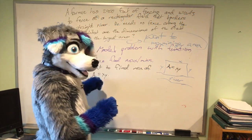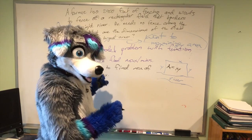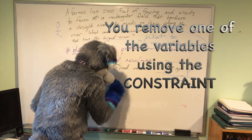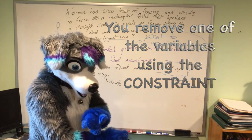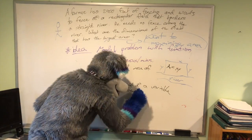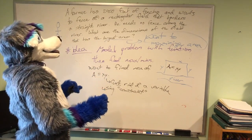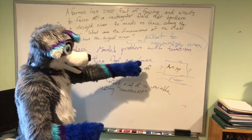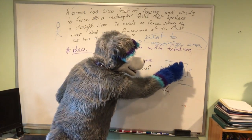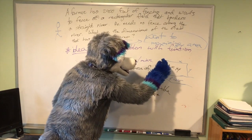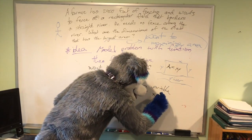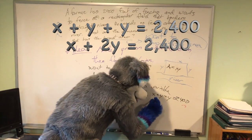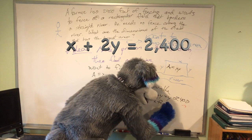But the thing is, we have two variables here. We need to get rid of one of the variables. We do that using our constraint. What's the only other piece of information we have? Well, we know that it all has to add up to 2,400. So x plus y plus the other y has to equal 2,400. Of course we can simplify that to x plus 2y equals 2,400.